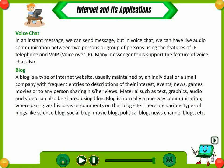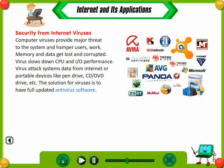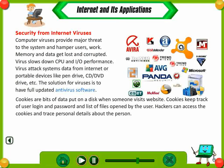Security from internet viruses. Computer viruses provide major threat to the system and hamper users - memory and data get lost and corrupted. Viruses slow down CPU and I/O performance, and attack systems data from the internet or portable devices like pen drive, CD, or DVD drive. The solution for viruses is to have fully updated antivirus software. Cookies are bits of data put on a disk when someone visits a website. Cookies keep track of user login and password and list of files opened by the user. Hackers can access the cookies and trace personal details about the person.